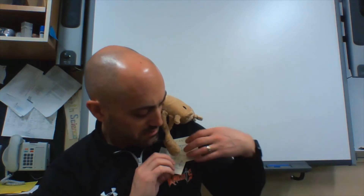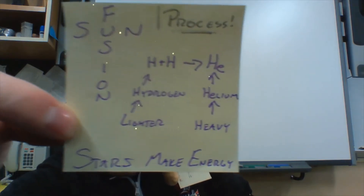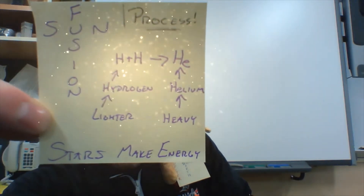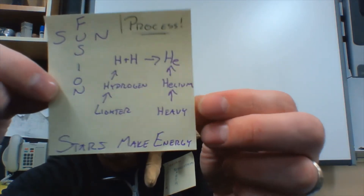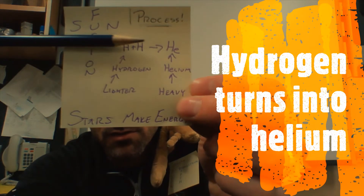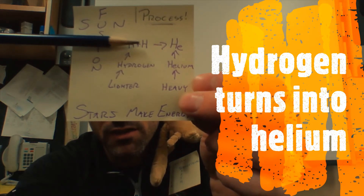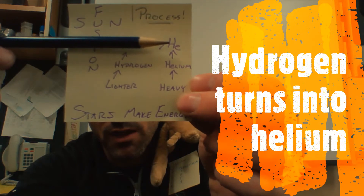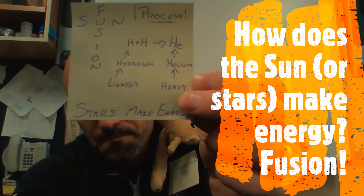Two more notes this time on space stuff. This one is talking about the Sun — the Sun makes energy by fusion. We have hydrogen turning into helium. Fusion is when gravity pulls things together enough that it actually creates a new element, and that gives off a ton of energy, which is what sunlight is.